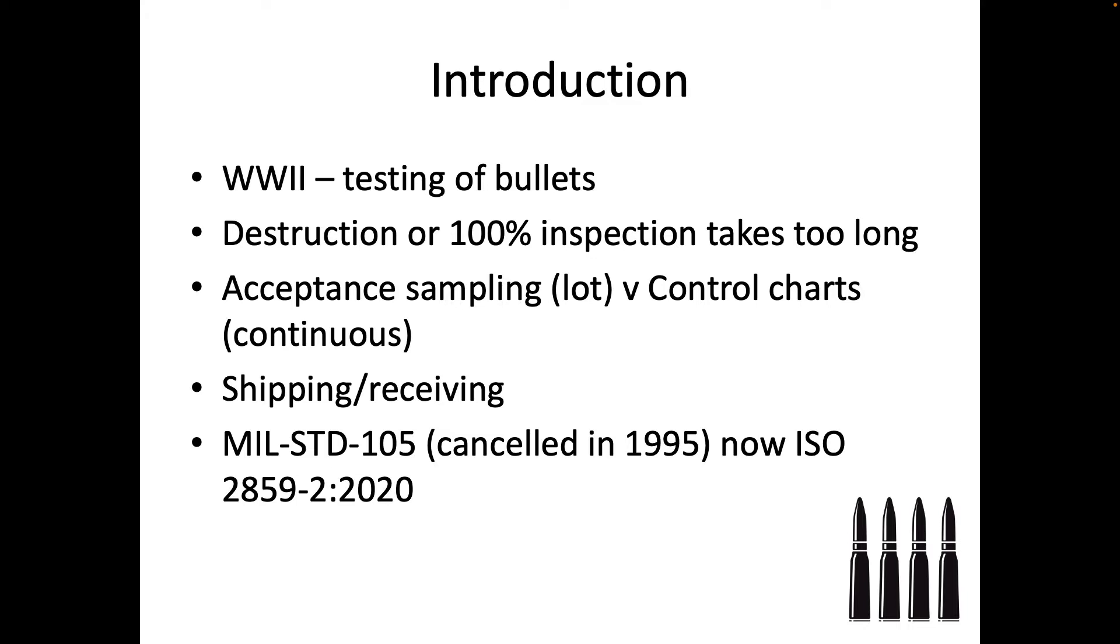It's often used in shipping and receiving because you're accepting something from a supplier or you're sending it to a consumer. So you want to make sure those things that you're accepting or sending are the correct kind of quality. Lots of the ways of doing acceptance sampling is defined in the MIL Standard 105, but actually this was cancelled and replaced by ISO 2859. There's definitely standards and we'll look at that.